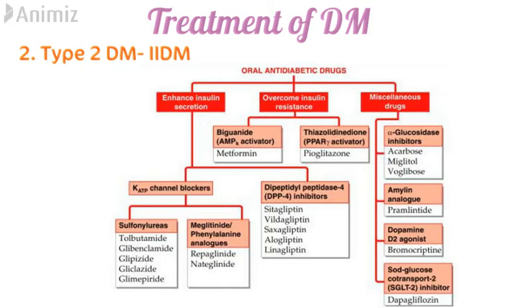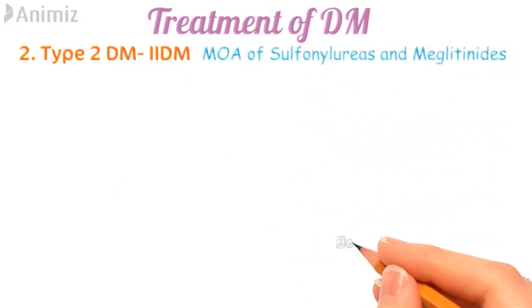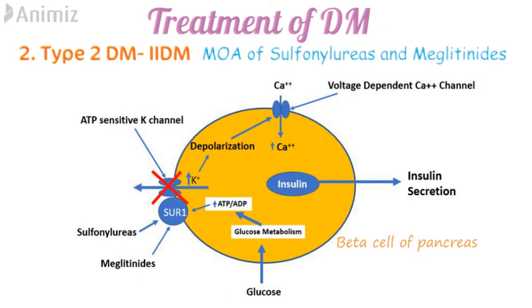Now let's see the mechanism of action of sulfonylureas and meglitinides. In beta cells, upon glucose metabolism, ATP is released, which opens ATP-sensitive potassium channels, causing potassium ions to move out of the cell. These two drug classes block this ion channel, causing potassium ion concentration to increase inside the cell, leading to depolarization and opening of calcium channels. The calcium ions move intracellularly and cause the secretion of insulin molecules.